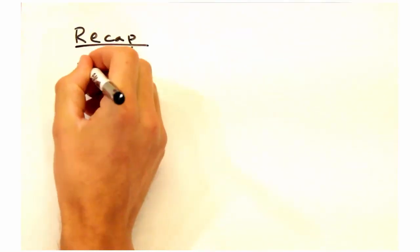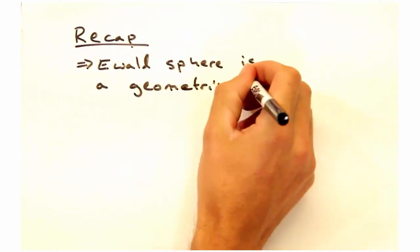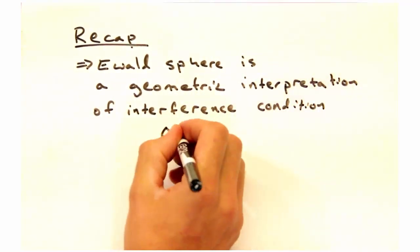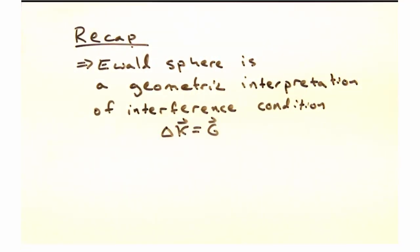So in short, the Ewald Sphere is a geometric interpretation of the delta k equals g interference condition. That's it in a nutshell.